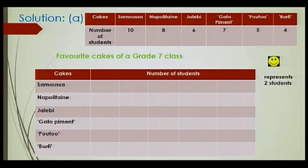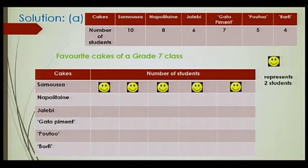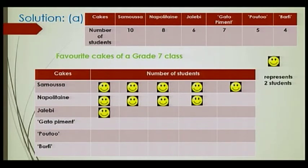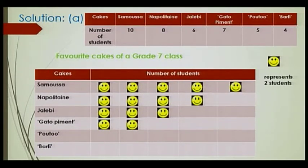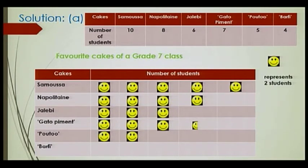For Samosa, we have 10 students. The key represents 2, so 10 divided by 2 equals 5 — I'm going to have 5 smileys. Napolitans: 8 divided by 2 equals 4 smileys. Similarly, for Jalebi: 6 divided by 2 equals 3 smileys. For Gâteau Piment, I have 7: 7 divided by 2 equals 3.5, so I'm going to have 3 full smileys and half of one to represent 7 students. For Poutou, 5 students: 5 divided by 2 equals 2.5, so 2 full smileys and a half. And for Burfi: 4 divided by 2 equals 2 smileys. Here is the pictogram.